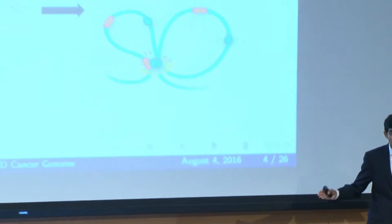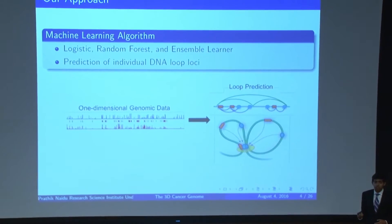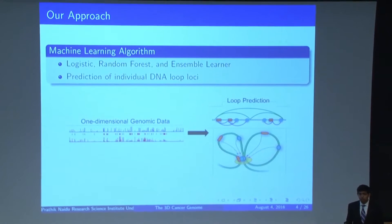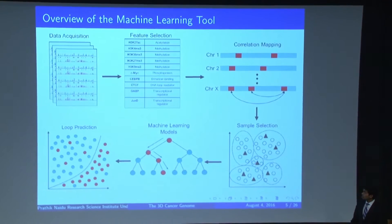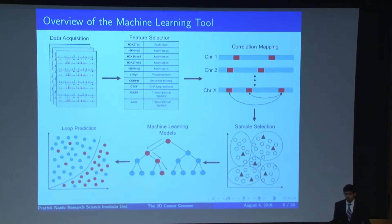In light of the problems with current approaches, our approach is to use a machine learning algorithm to efficiently and accurately predict individual DNA loop locations that occur across the entire genome. The idea is that we can use one-dimensional genomic data in order to predict 3D interactions in our genomes. Here's an overview of our machine learning tool and our pipeline. We begin with data acquisition and go through multiple pre-processing steps in order to optimize the performance of our machine learning model before actually predicting our loops.